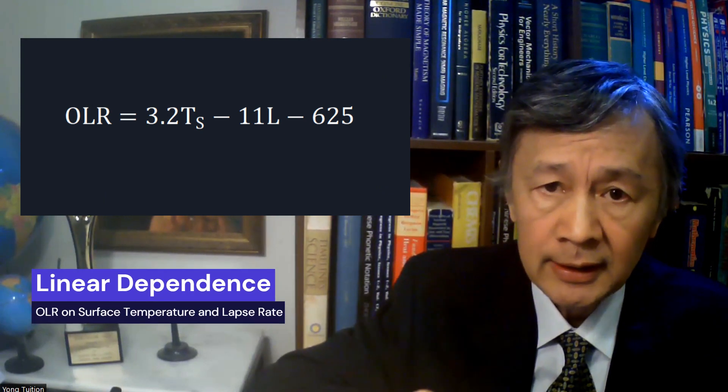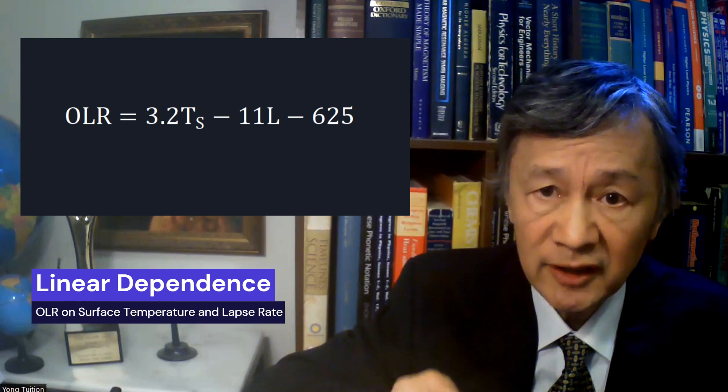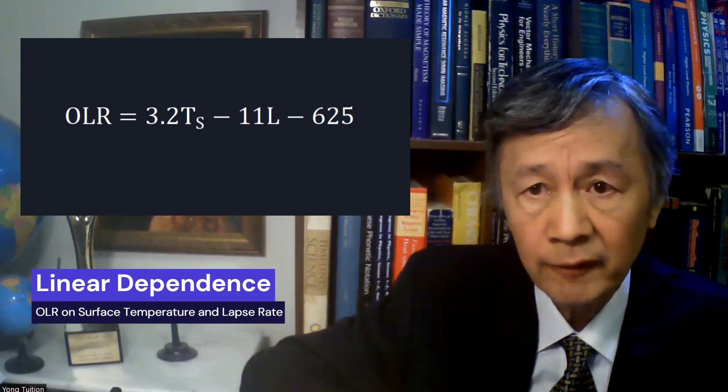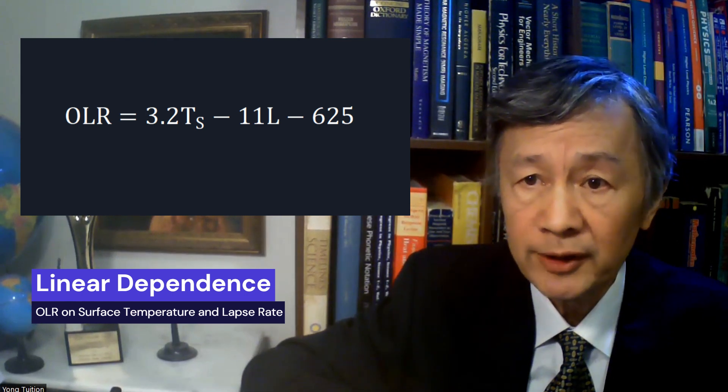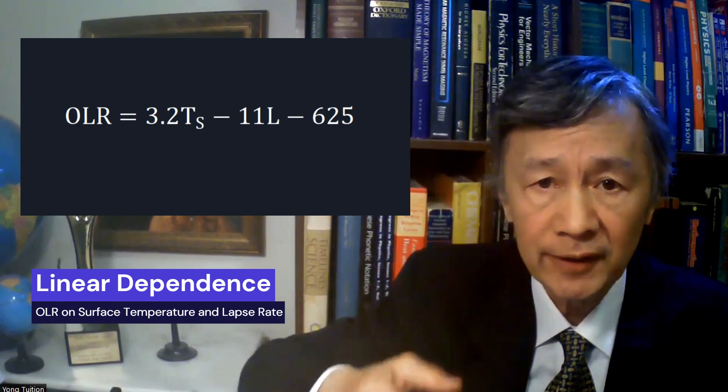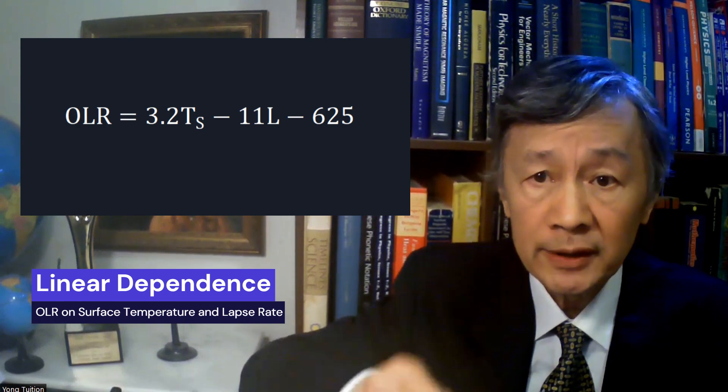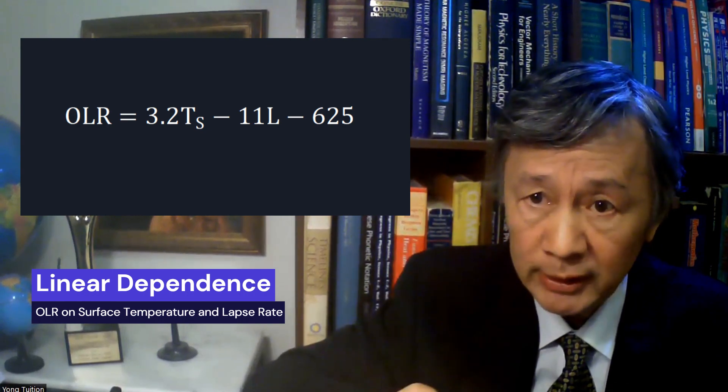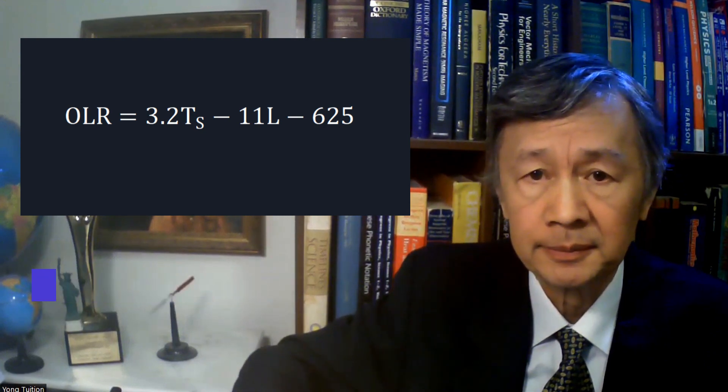Notice, the slope in this equation is 3.2 instead of 2.2 for the dependence on the surface temperature, when the tropospheric lapse rate is fixed. To visualize these three variable functions, namely OLR, surface temperature in K, and the lapse rate in K per kilometer, I will use a cadmium again.